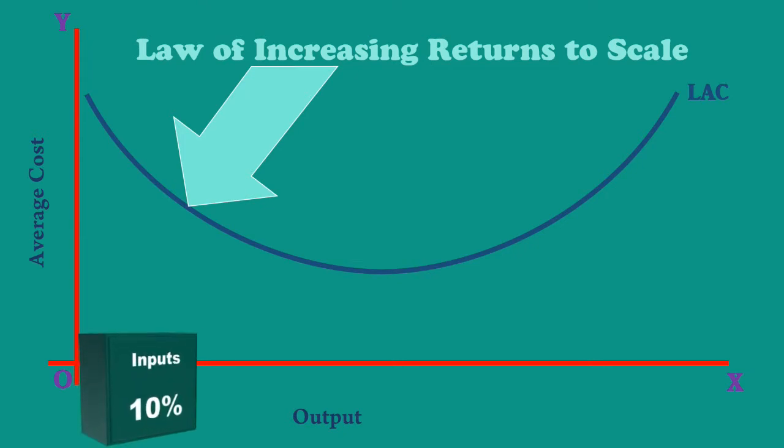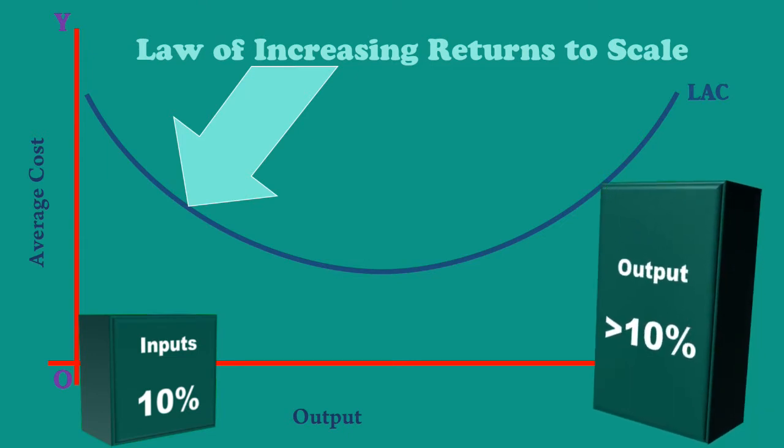Suppose all the inputs are increased by 10%. Output will increase by more than 10%. Hence, the per unit cost falls.